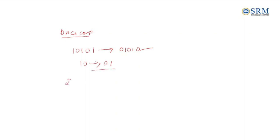Now we will go for two's complement. Two's complement performs the same operation as one's complement, but it adds 1 to it. For example, say I have the same number 10101.